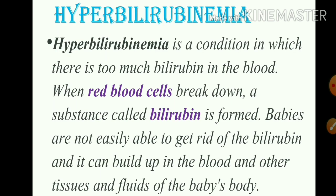Hyperbilirubinemia is a condition in which there is too much bilirubin in the blood. When red blood cells break down, a substance called bilirubin is formed. In this excess condition, babies are not easily able to get rid of the bilirubin and it can build up in the blood and other tissues and fluids of the baby's body, resulting in hyperbilirubinemia.